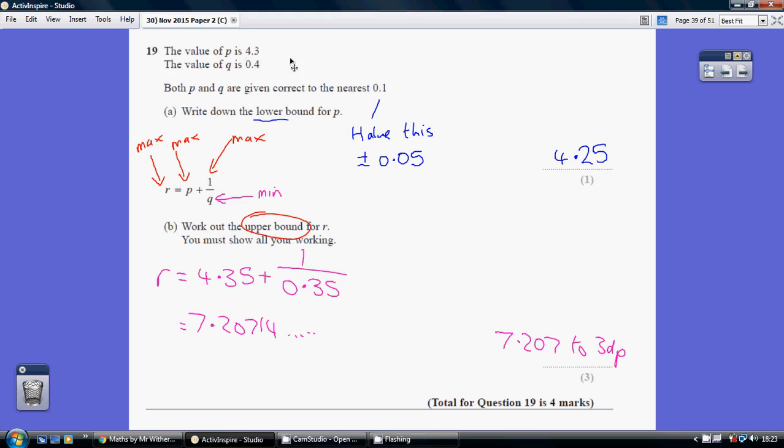Now, the rule of thumb here is to halve the value they give you, which you've got to get correct to the nearest. So half of 0.1 is 0.05.